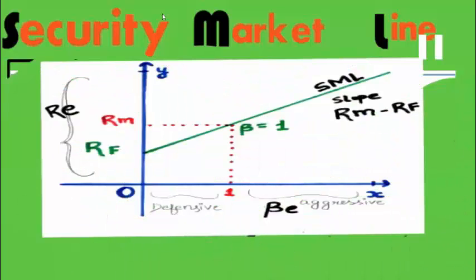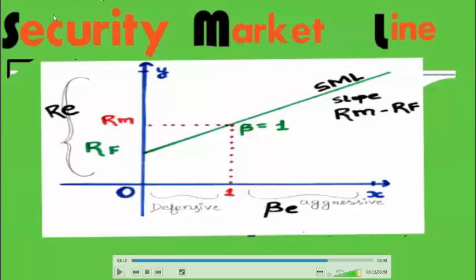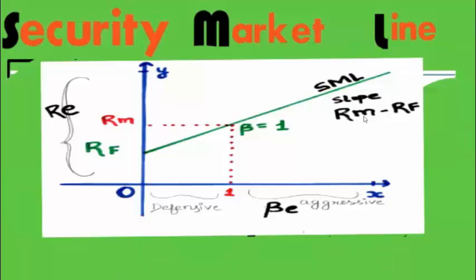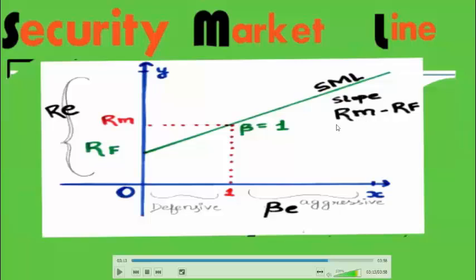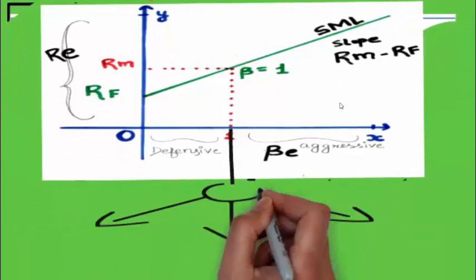The graphical presentation of SML has the required rate of return on the Y-axis and beta (risk) on the X-axis. The line starts at RF — the return earned with zero risk by investing in government bonds — and slopes upward. The slope is driven by the market risk premium (RM − RF), and beta equals 1 marks a key reference point on the line.